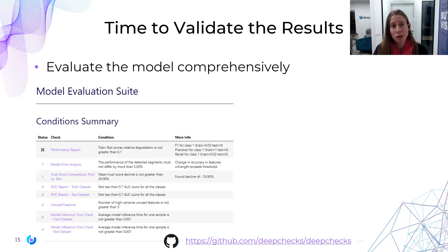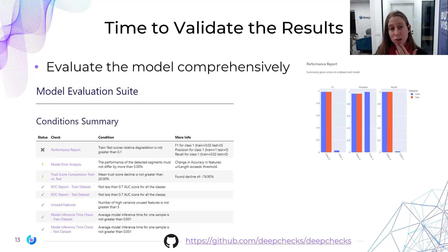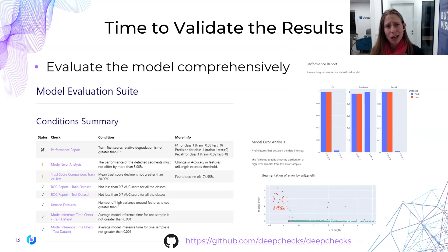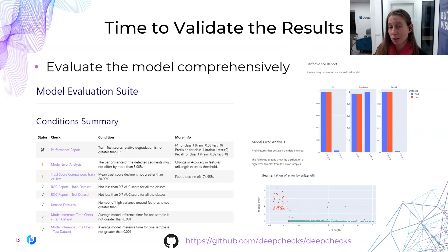Looking at the results themselves — we trained the model and now want to evaluate it. We can consider things related to its performance: is it performing much worse on the test set than on the train? Is a specific class, or overall performance, below a certain threshold for some of the metrics? We can look at different performance metrics across different aspects and over time. Also, is there a specific feature that is indicative of higher error in the model? That may indicate some type of problem, or enable us to improve the model or work with that feature better.